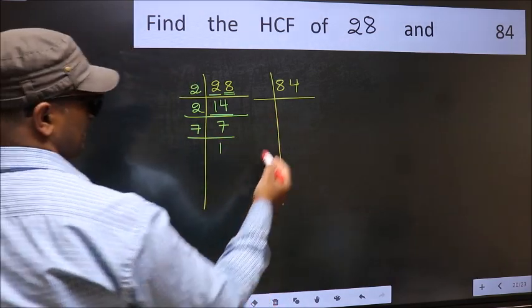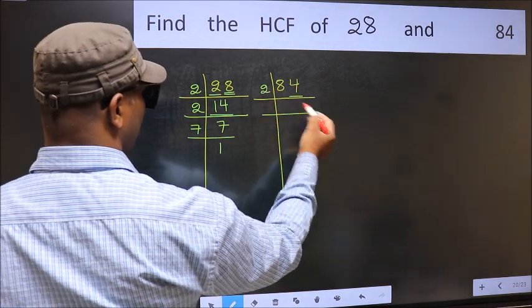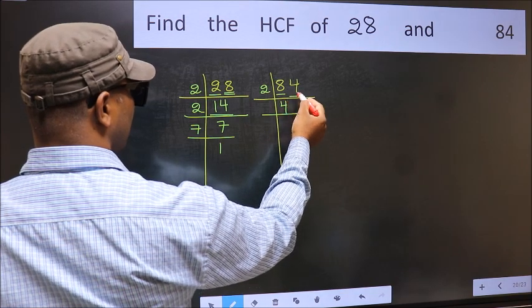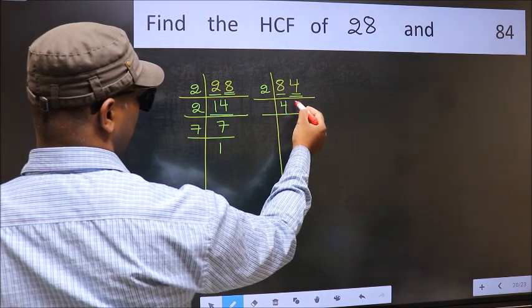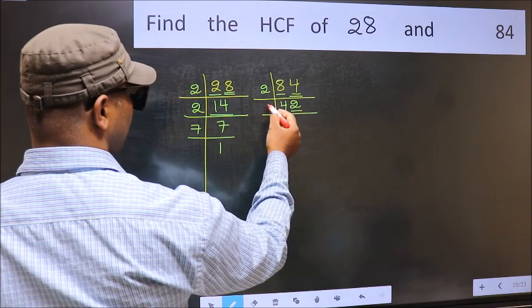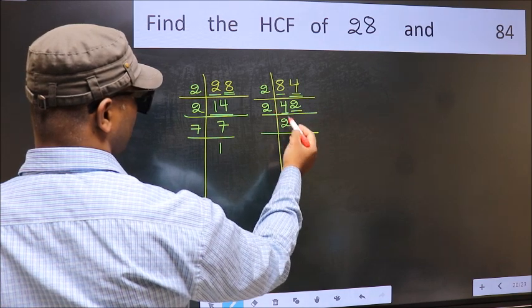Now the other number. Last digit 4 is even, so take 2. First number 8, when do we get 8 in 2 table? 2 times 4 is 8. The other number 4, when do we get 4 in 2 table? 2 times 2 is 4. Now last digit 2 is even, so take 2. First number 4, when do we get 4 in 2 table? 2 times 2 is 4.